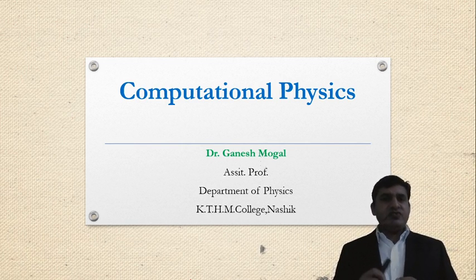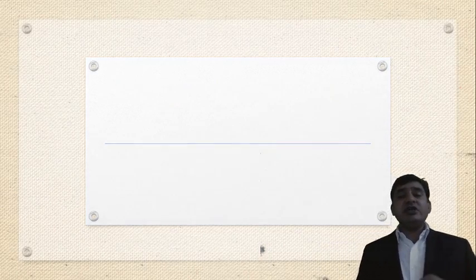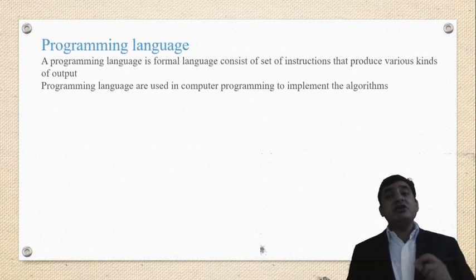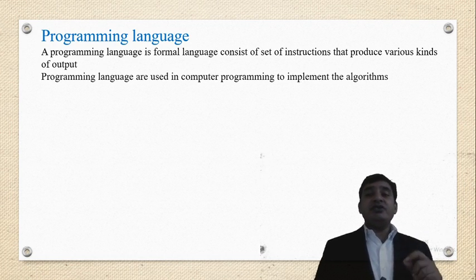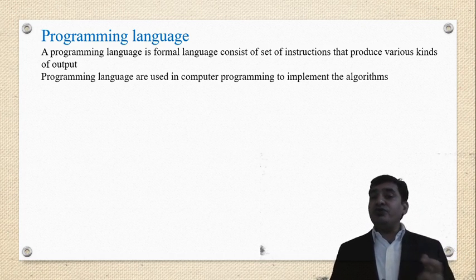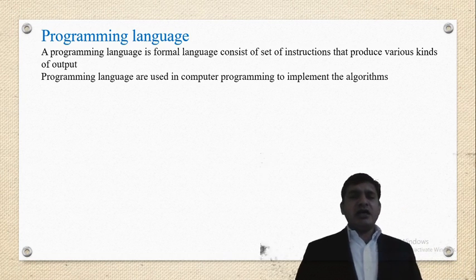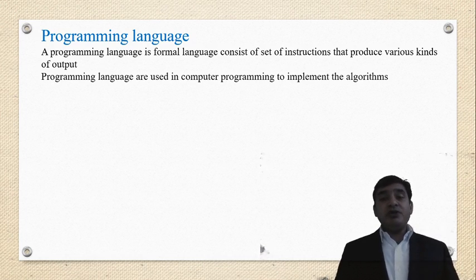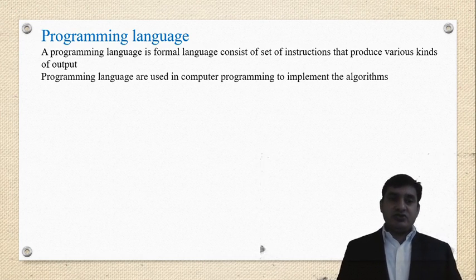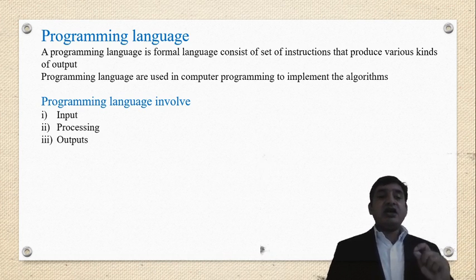First, what is a programming language? The programming language consists of a set of instructions that produce various kinds of output. Generally, programming languages are used in computer programming to implement the algorithm, or we can say that programming languages are used to implement the flowchart also. Programming language involves input, processing, and output.